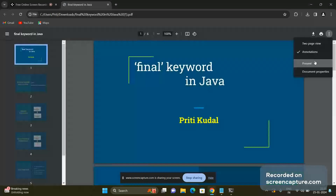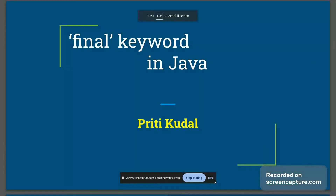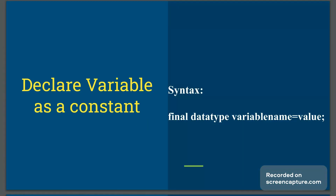Welcome back. Let's learn about the use of the final keyword in Java. The first use of the final keyword is to declare a variable as a constant. A constant is a variable whose value does not change throughout the program. If you want any variable to have a fixed value that should not change, you can declare it as a constant using the syntax: final datatype variableName = value.